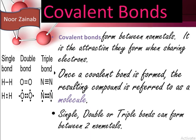A triple bond involves the sharing of three pairs of electrons. For example, N₂ has a triple bond, O₂ has a double bond, and H₂ has a single bond.